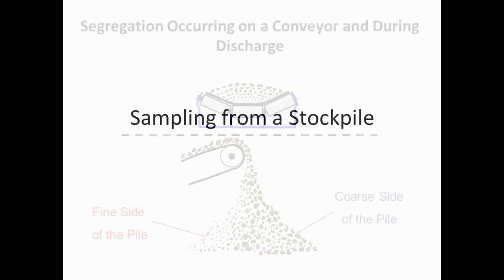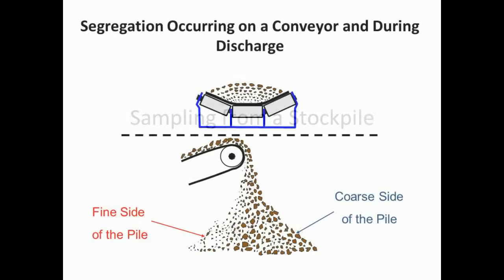In sampling materials from stockpiles, it is difficult to ensure unbiased samples due to the segregation which often occurs when the material is stockpiled, with coarser particles rolling to the outside base of the pile.